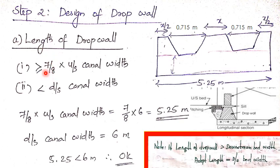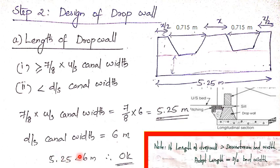For the length of the drop wall, the condition is: length ≥ (7/8) × upstream canal width, and also less than the downstream canal width. The upstream canal width is 6 meters, so (7/8) × 6 = 5.25 meters. Since 5.25 is less than the downstream canal width of 6 meters, we take 5.25 meters as the length of the drop wall. Note: if the calculated length exceeds the downstream bed width, adopt the downstream bed width itself.